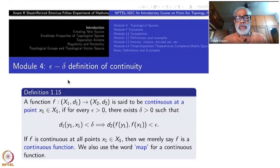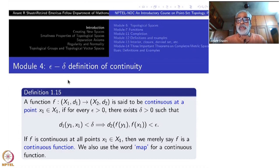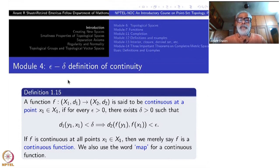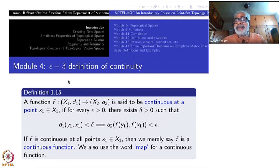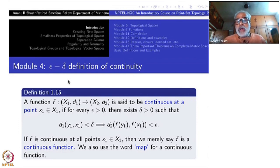Welcome to module number 4 of the point set topology course. Today we shall take up one of the important concepts, namely continuous functions on metric spaces. Starting with the idea from our basic lessons in real analysis of real-valued functions of real numbers, how you define continuity there using the epsilon-delta definition — that exact same definition can be adopted here. This will be called the epsilon-delta definition of continuity.